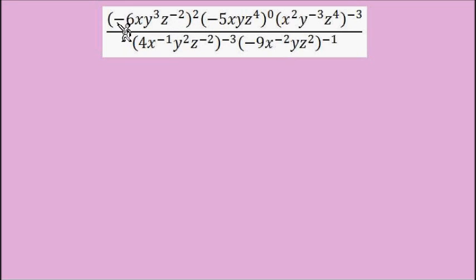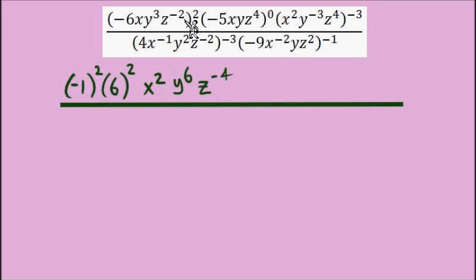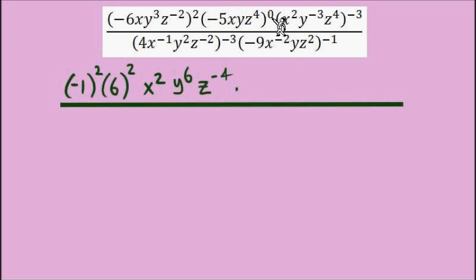In this first set of parentheses we see a negative coefficient, negative 6. I'm going to begin a big fraction here. This negative 6 I'm rewriting as negative 1 times 6, and each of those gets an exponent of 2. Next we have x with an exponent of 2, y to the power of positive 6, and z to the power of negative 4 as we multiply that exponent in. The next set of parentheses has an exponent of 0 — that makes this entire expression equal to 1, so we can drop that times 1 entirely.